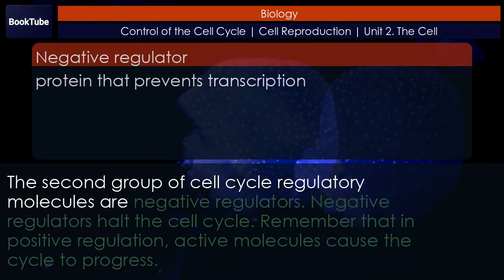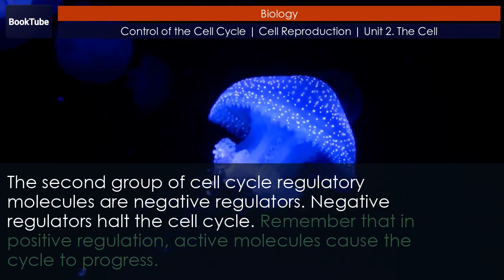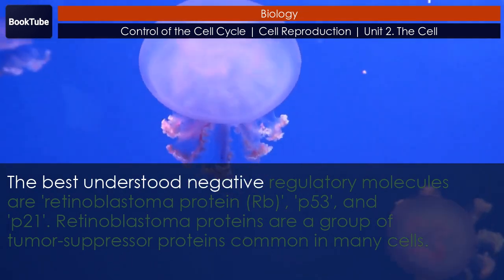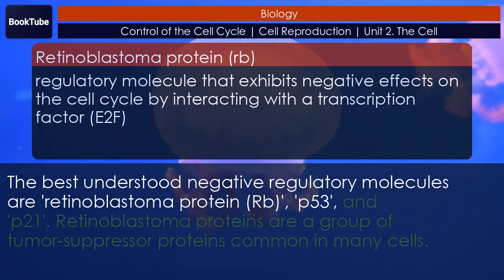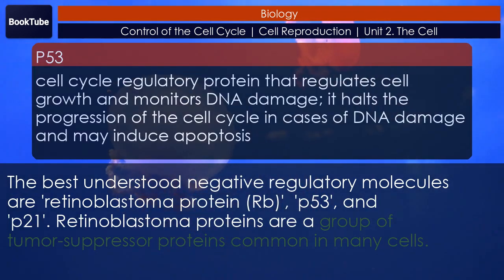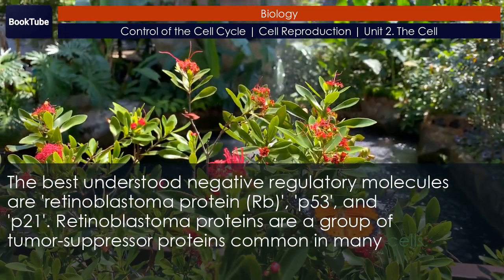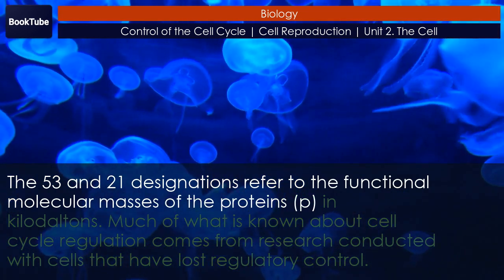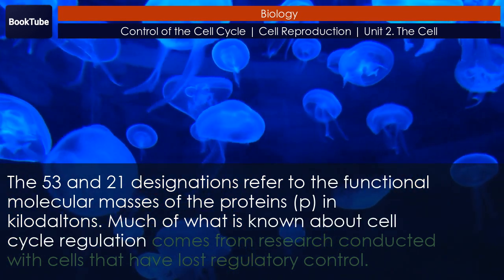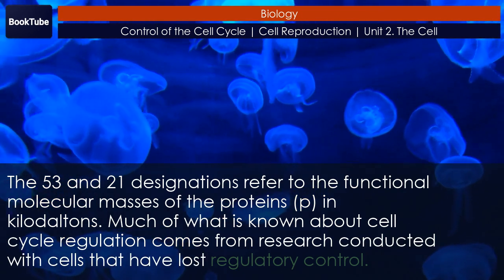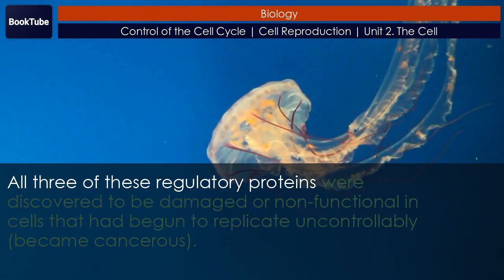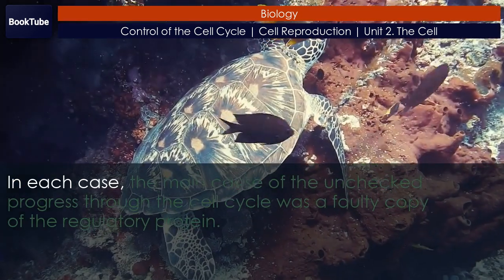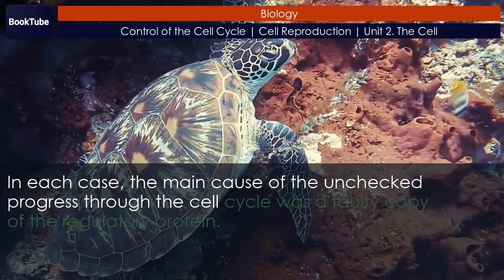The second group of cell cycle regulatory molecules are negative regulators, which halt the cell cycle. The best understood negative regulatory molecules are retinoblastoma protein (Rb), p53, and p21. Retinoblastoma proteins are a group of tumor suppressor proteins common in many cells. The 53 and 21 designations refer to the functional molecular masses of the proteins in kilodaltons. All three proteins were discovered to be damaged or non-functional in cells that had begun to replicate uncontrollably and became cancerous, with a faulty copy of the regulatory protein being the main cause.